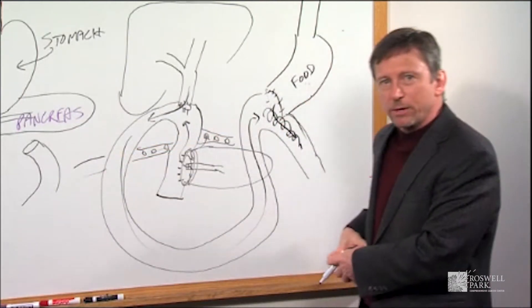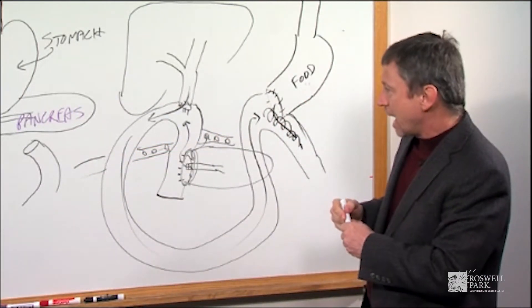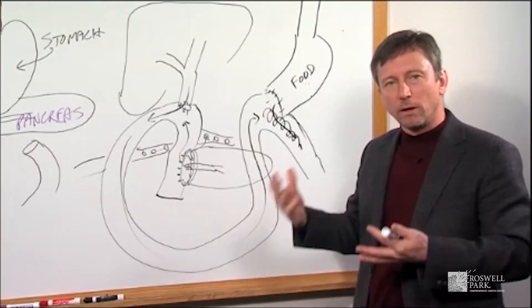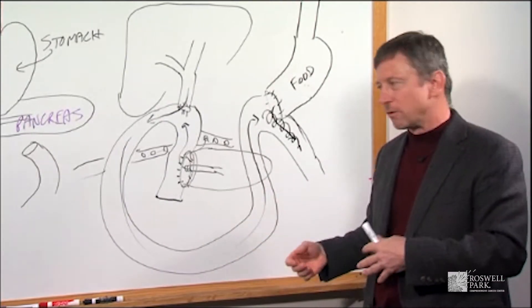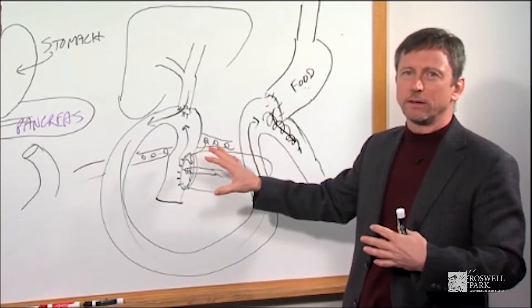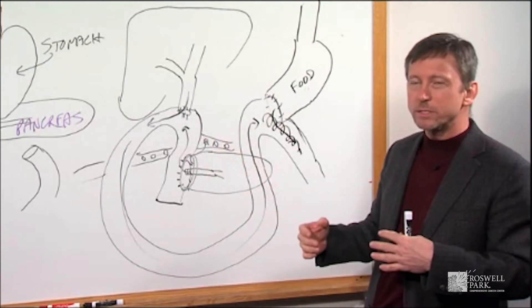And that drain, we lay right next to the pancreas so if the pancreas, and that little drain has holes in it, so if there's a leak of pancreatic juice the drain will pick it up and it'll carry it out to the bulb. Now if that happens, many times that can be managed with just the drain and modifying your diet, putting you on a low-fat diet, and as I said about nine out of ten times this will heal on its own.